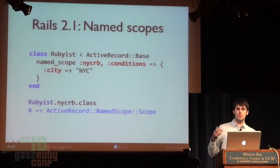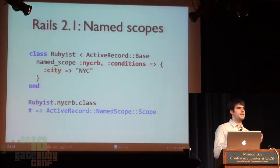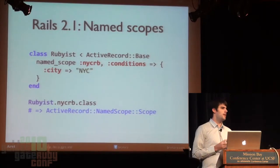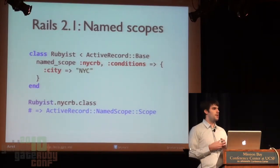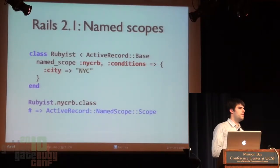How many times have you written a query that started with the conditions hash, and then pretty soon you have one thing you can't express in the hash? You need to rewrite that whole query using the array interpolation syntax, writing out all the SQL and substituting the values. In Rails 2.1 we got named scopes — a convenience where you can declare a query to be named and reuse it later — but it still suffers from the same problem, forcing you to use hashes for all query definition.